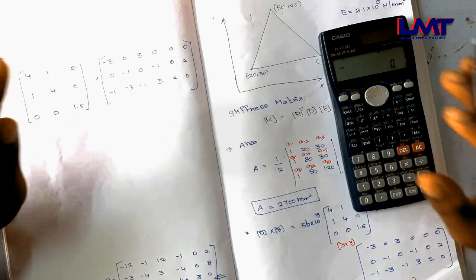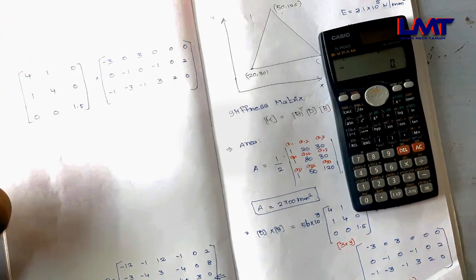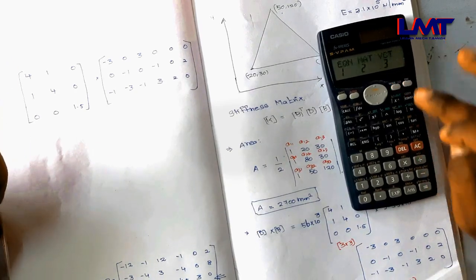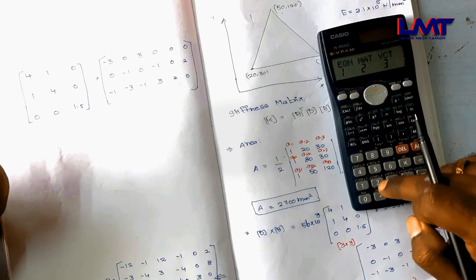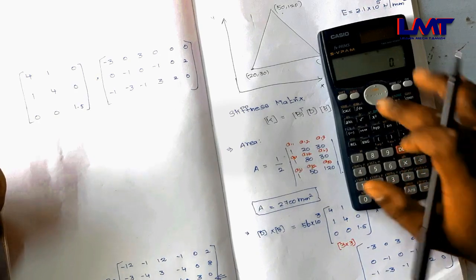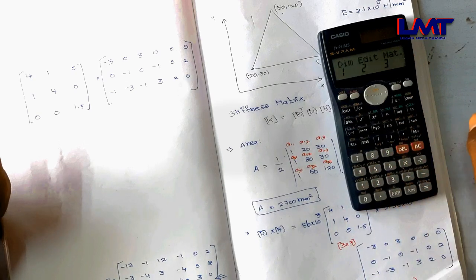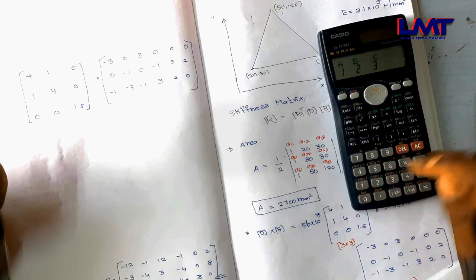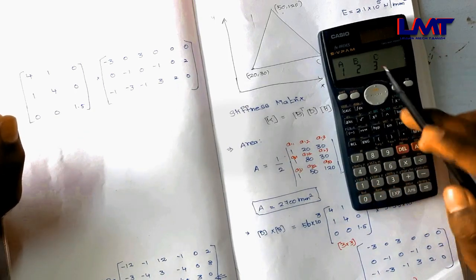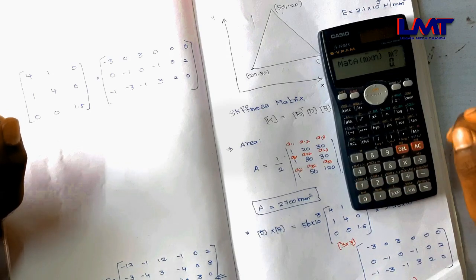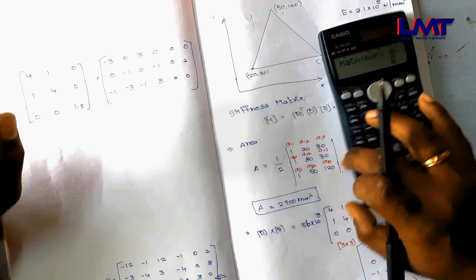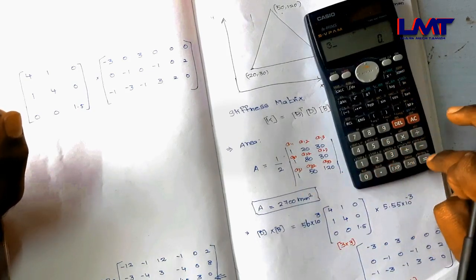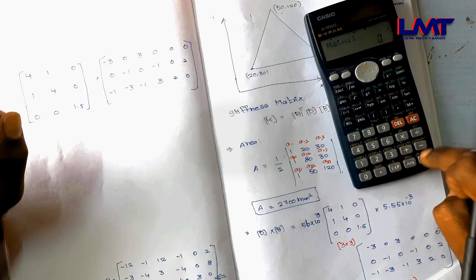We are using the Casio FX-991-MS, which is allowed in the university exam. We can do up to a maximum 3×3 matrix, and by partitioning we handle 6×3 and 6×6 matrices. First, click the mode button to open the matrix menu, then press Shift 4 to go to Dimension Edit.